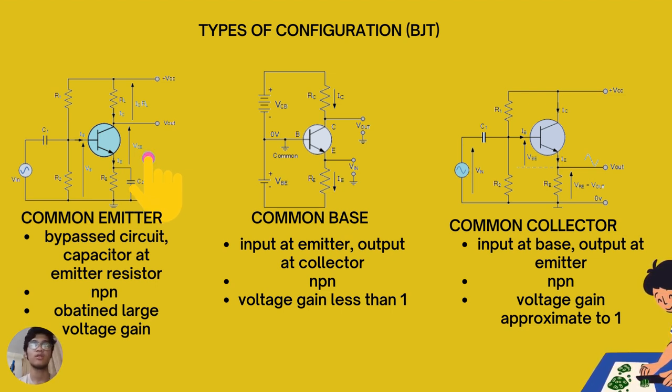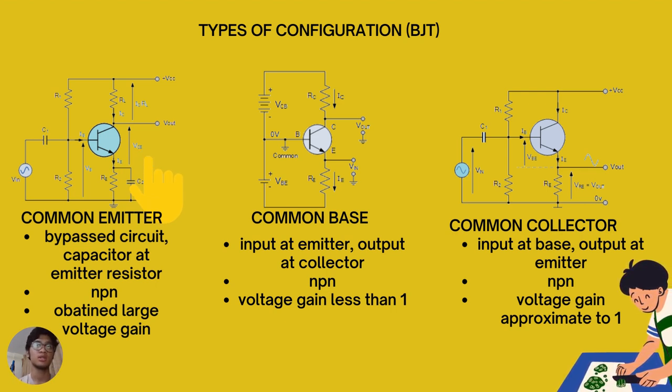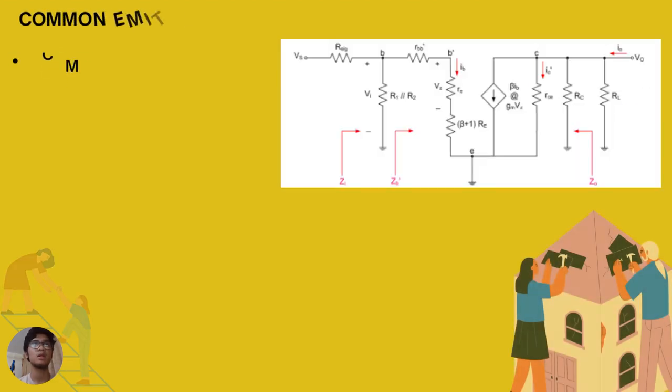Last but not least, we have common base. In common base, input current flowing into the emitter is quite large as it is the sum of both the base and the collector current respectively. Therefore, the collector current output is less than the emitter current input, resulting in the current gain for this type of circuit being unity which equals 1 or less. In other words, the common base configuration attenuates the input signal.